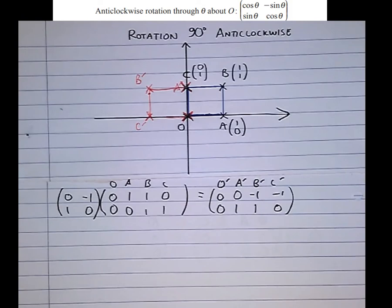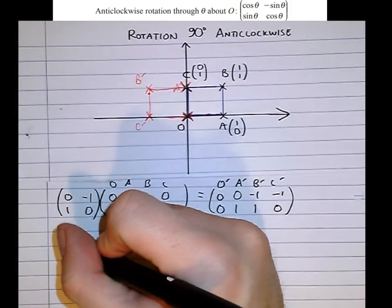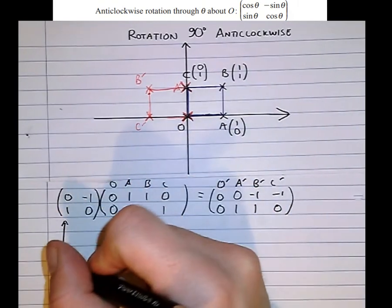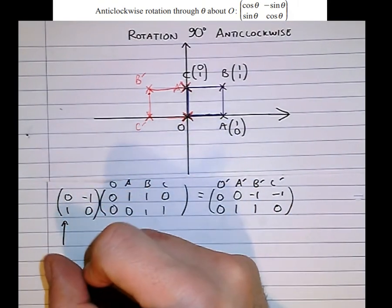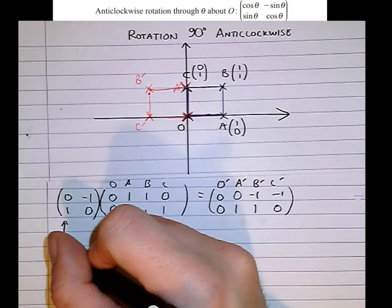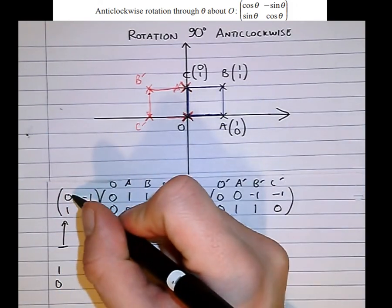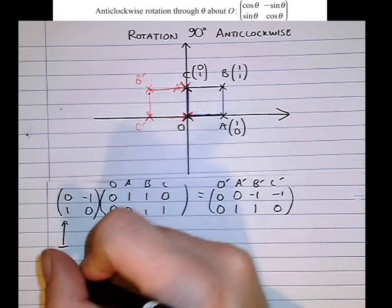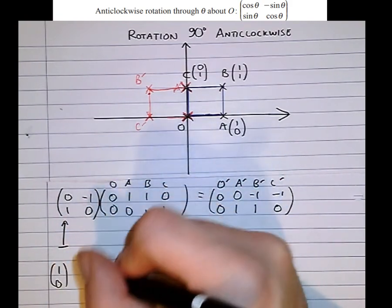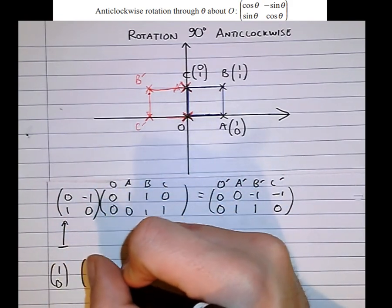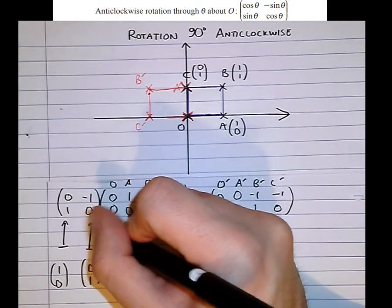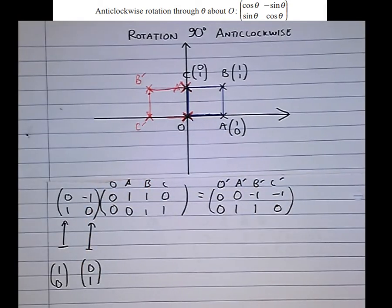Notice also that any matrix that performs a transformation, this first column here is where the element 1, 0 ends up. So 1, 0 in the original set of coordinates always gets mapped to this first element here. Here is where 0, 1 gets mapped to. And that works for every single matrix.